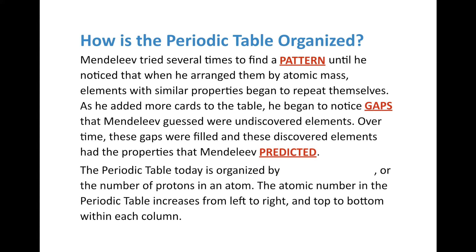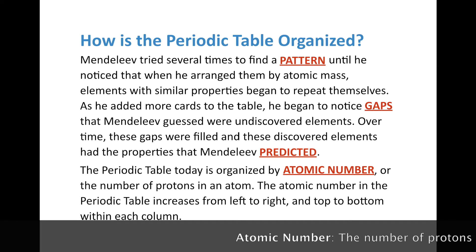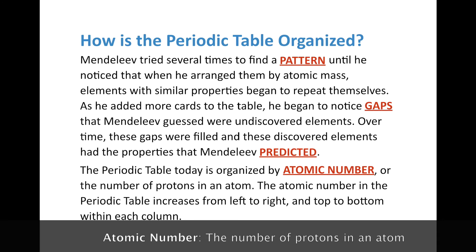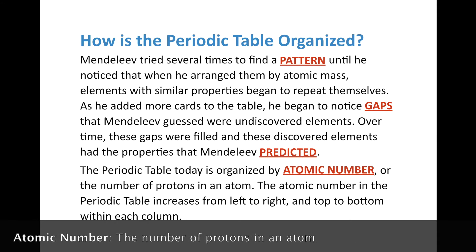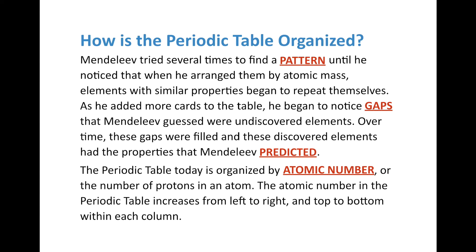The Periodic Table today is organized by the atomic number of an atom, or the number of protons in an atom. So when you look at an element, you see a number — the atomic number — which is simply the number of protons in the atom. The atomic number in the Periodic Table increases from left to right and top to bottom within each row, and top to bottom within each column.